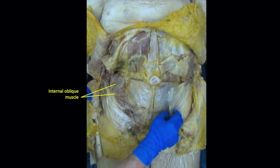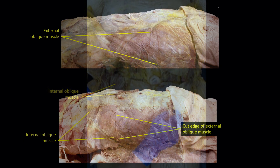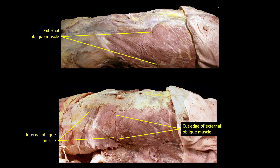Underlying the external oblique is the internal oblique muscle and its aponeurosis. The fibers of the internal oblique are oriented supermedially from bottom to top, whereas the fibers of the external oblique are oriented supermedially from top to bottom. This difference in fiber orientation is clearly demonstrated in a separate cadaver dissection, where partially reflecting the external oblique reveals the perpendicular orientation of the internal oblique fibers.